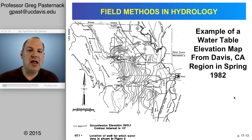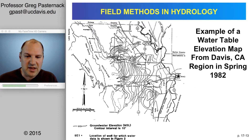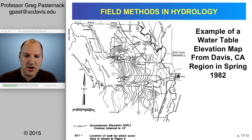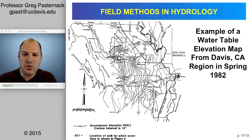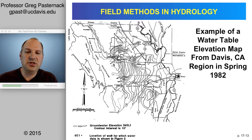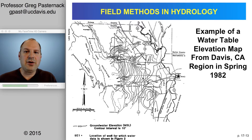Here's an example of a water table elevation map from Davis, California. Davis is right in the middle of this map. We've got the mountains to the west, Lake Berryessa over here, and on the other side, Sacramento and the Sacramento River. You can see contour lines going pretty much across the valley, which indicates that the water is coming out of the mountains and going down towards Davis and eventually all the way over to the Sacramento River. Not only does water flow on the surface in relation to topography, but it's also flowing in the subsurface in relation to topography as well.